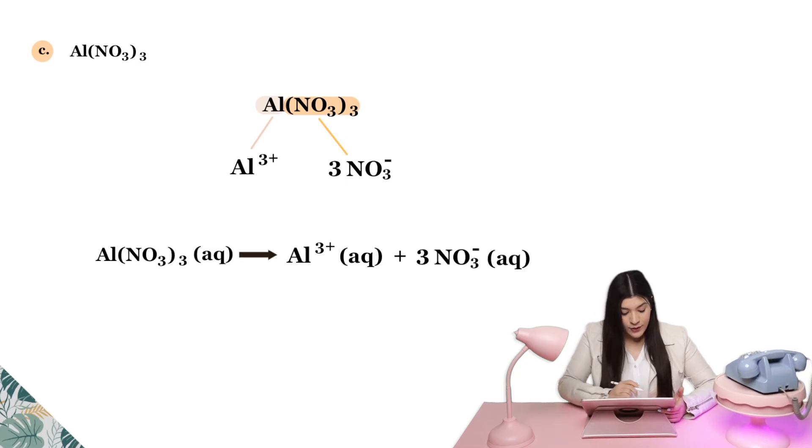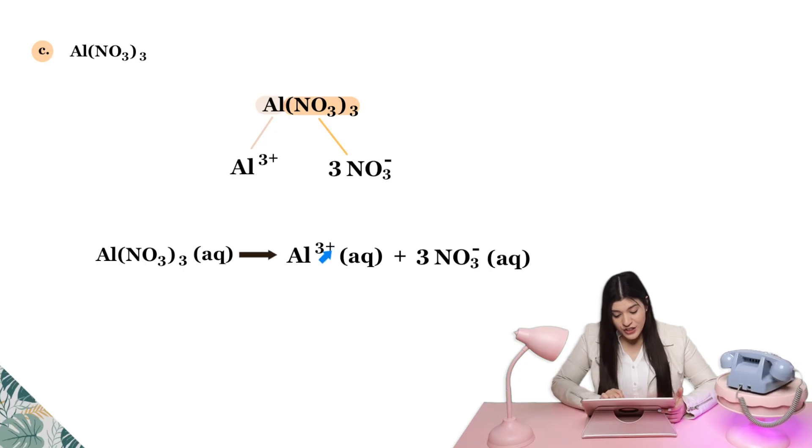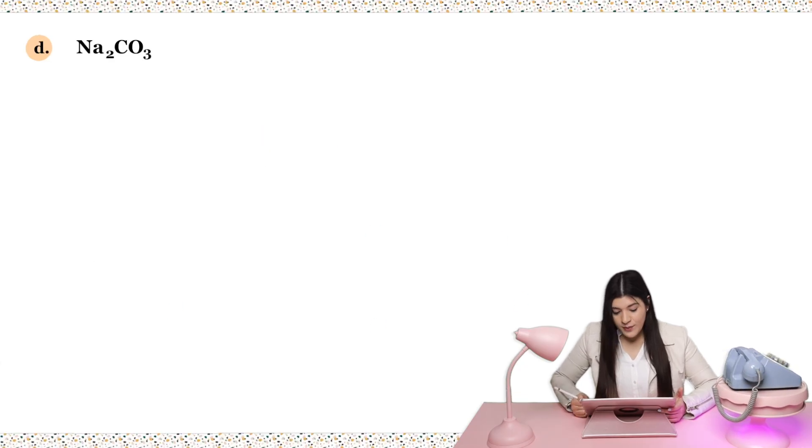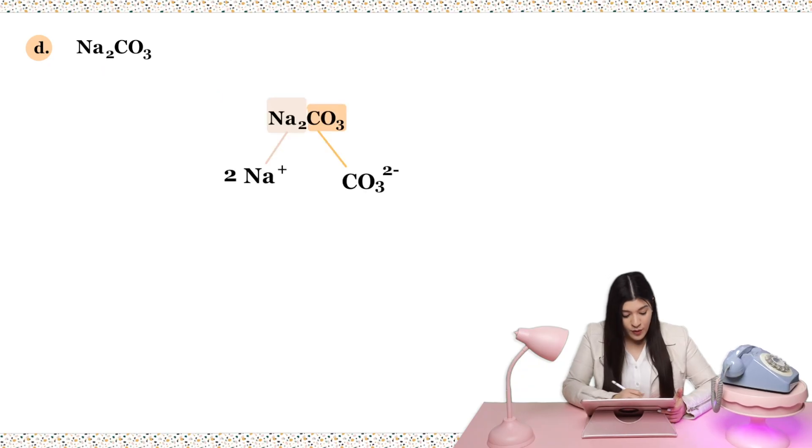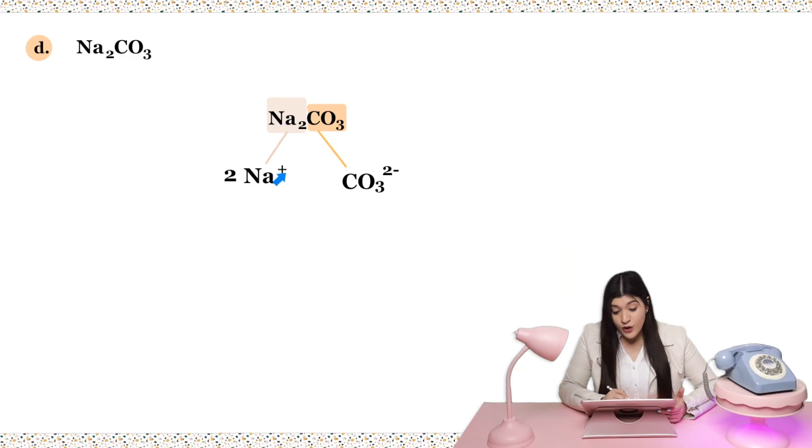And then now I'll put this all together in my equation, where I start off with my reactant is whatever I started off with. I'm breaking this apart. I have my aluminum with the 3+ charge, and I have 3 nitrates. And that's my dissociation equation. I have one more to go. Let's do this one together. Once again, I'm just going to break this apart to the metal and the non-metal. Here sodium has a +1 charge. That's just the typical charge for sodium. But this 2 subscript tells me that I have 2 sodiums.